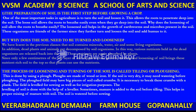The preparation of soil is the first step before growing a crop. One of the most important tasks in agriculture is to turn and loosen the soil. This allows roots to penetrate deep into the soil. The loose soil allows roots to breathe easily even when they go deep. The loosened soil helps in the growth of earthworms and microbes present in the soil. These organisms are friends of farmers since they further turn and loosen the soil and add humus to it. Earthworm is a kind of farmer.